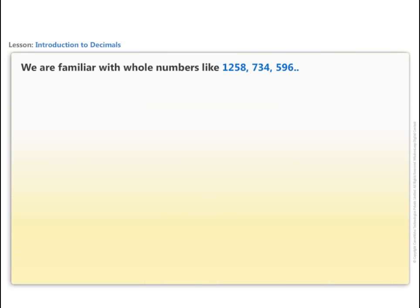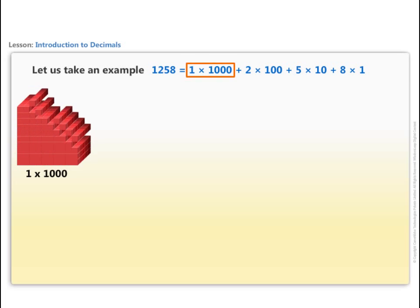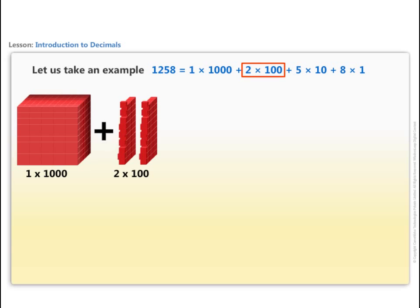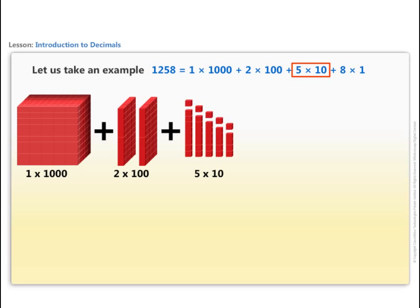We are familiar with whole numbers like 1258, 734, 596. Let us take an example: 1258 can be expressed in terms of ten. So it has one thousand, two hundreds, five tens, and eight ones.